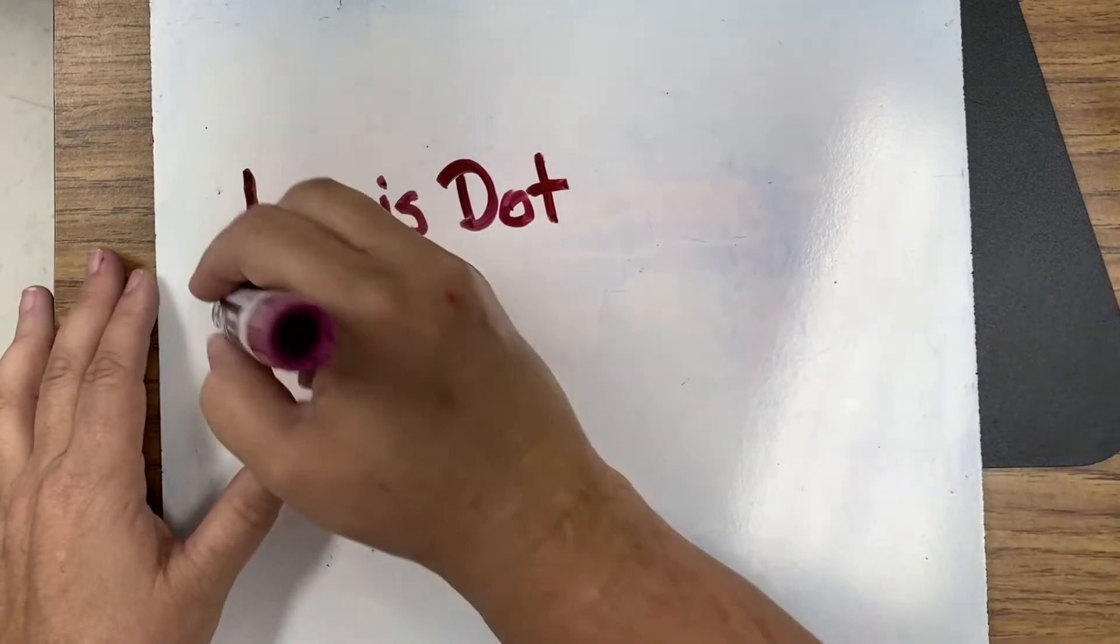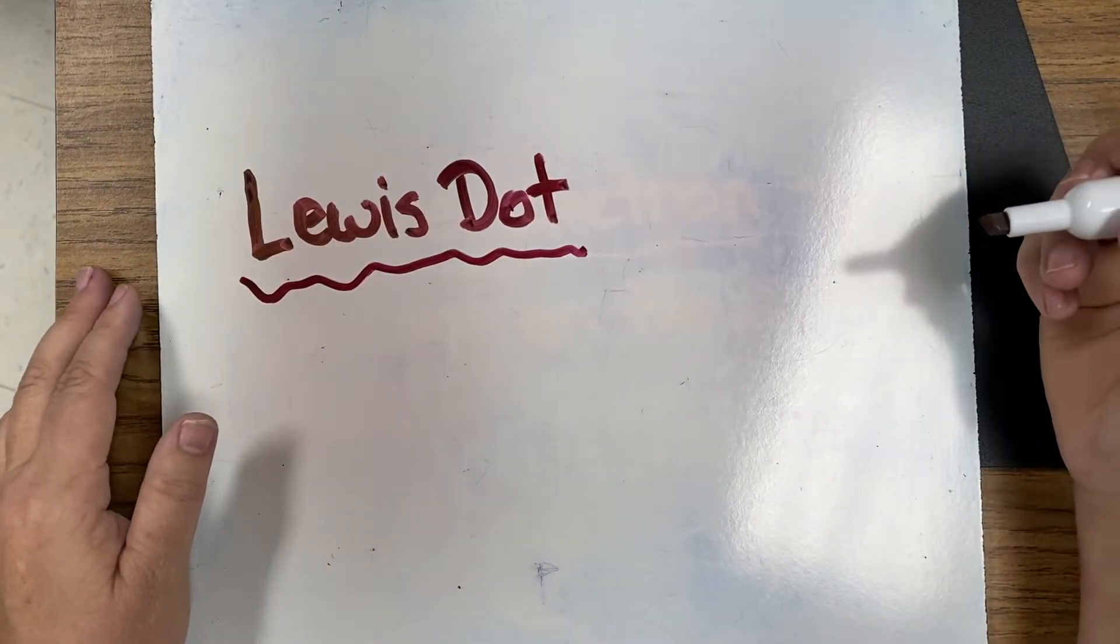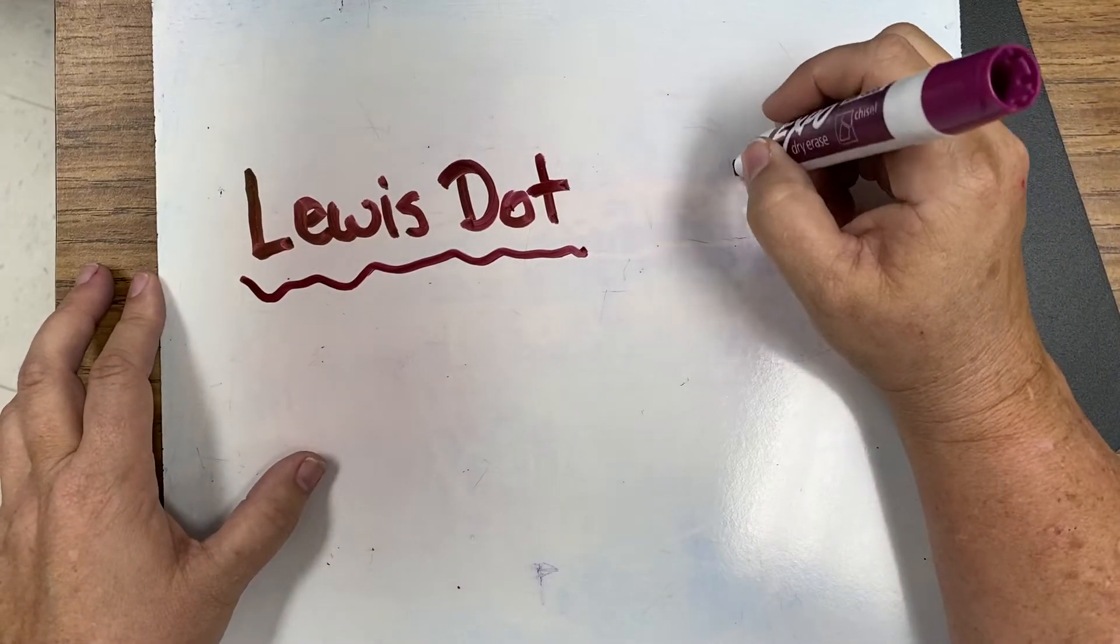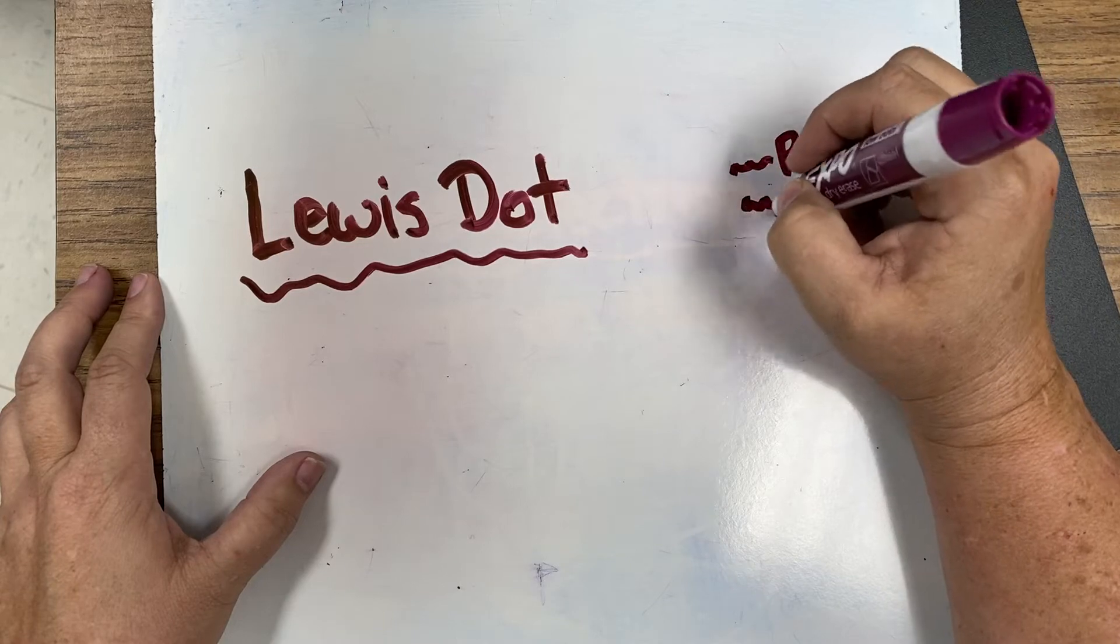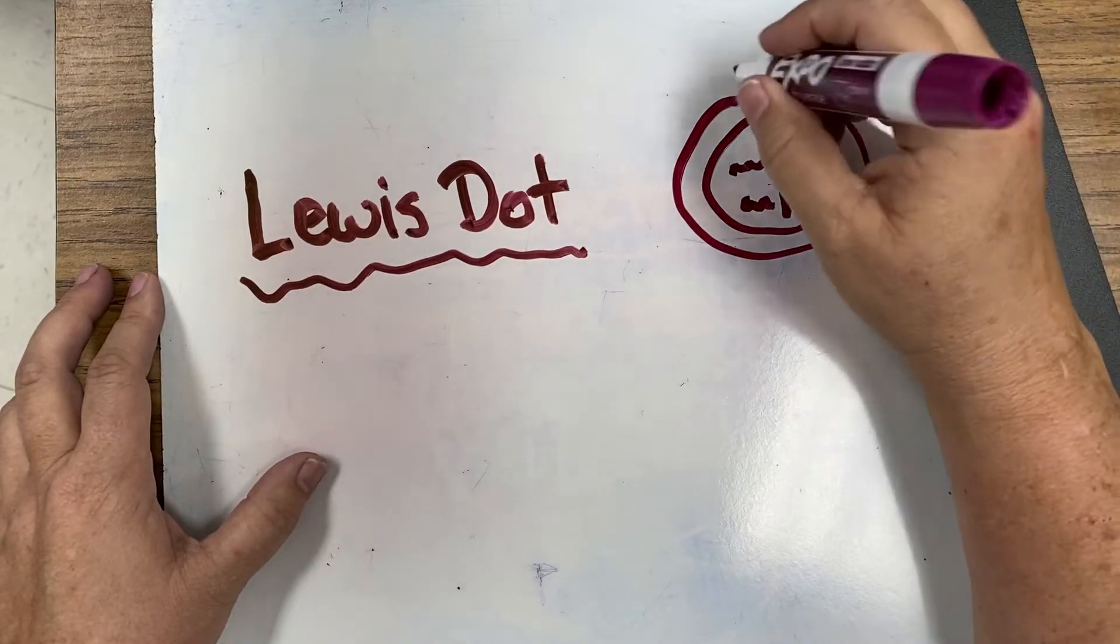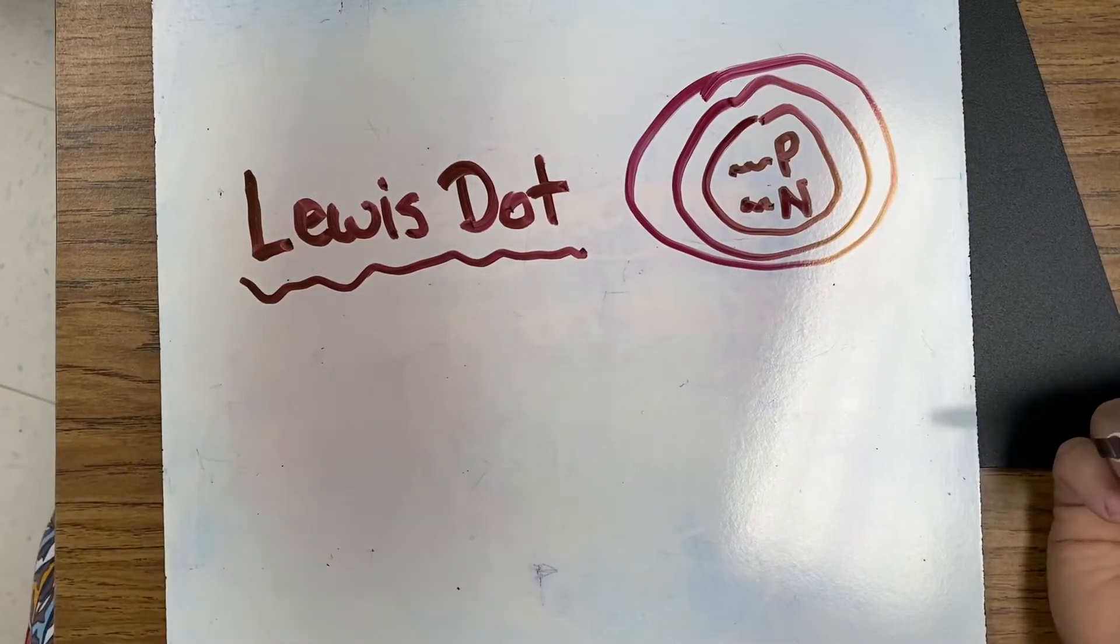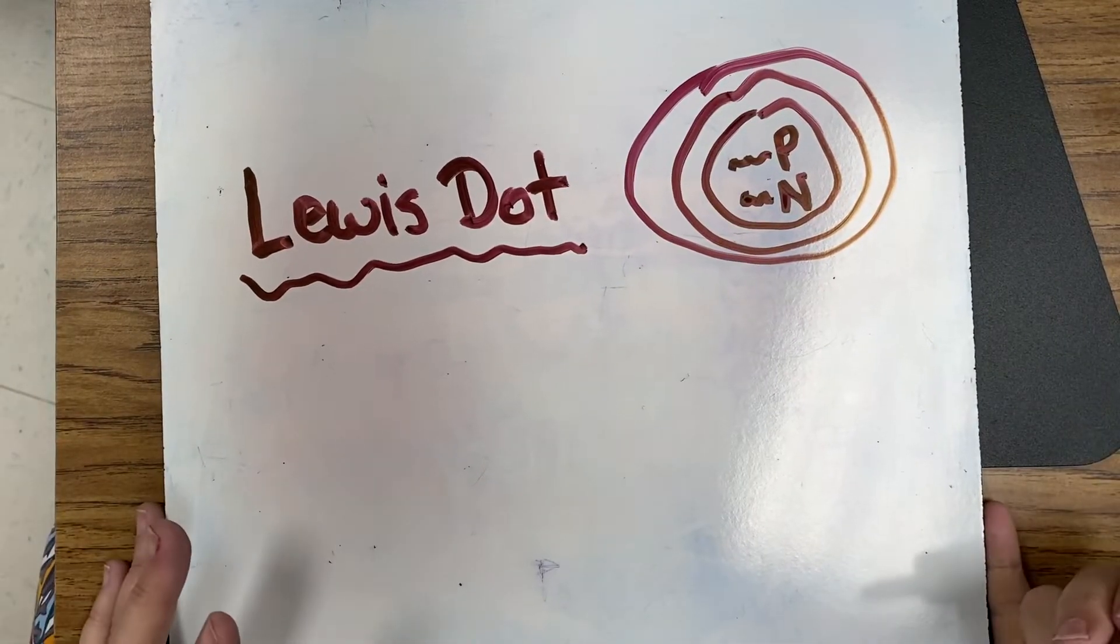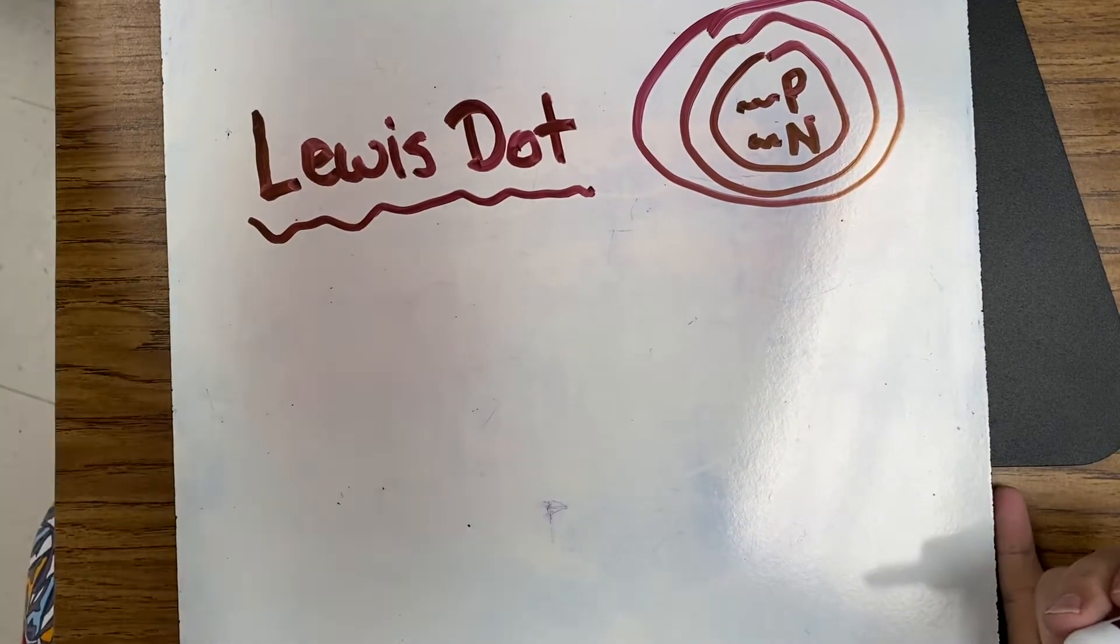With Lewis dot structures, it's kind of a shorthand method. So remember with the Bohr model, we would have our number of protons and our number of neutrons, and then we would put our electrons on our different rings. Well, with the Lewis dot structure, we can quickly and easily show just the number of valence electrons that are found.